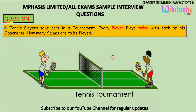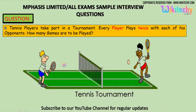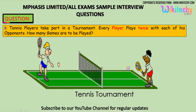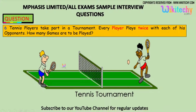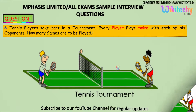Here is the question. Six tennis players take part in a tournament. Each player plays twice with each of his opponents. How many games are there to be played?